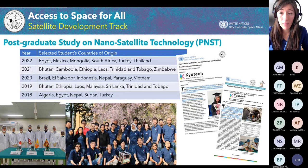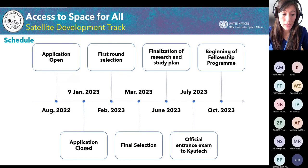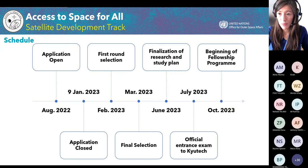We have many countries that have participated in PNST. You can see the different fellows selected over the past five years, coming from all different regions. The application is open right now and will close on January 9th next year, so you have a few more months to put together the documents. Selection will start from February through March. If selected, you will finalize your research and study plan, take the entrance exam at QTEC, and the fellowship will begin in October — basically a year from now.